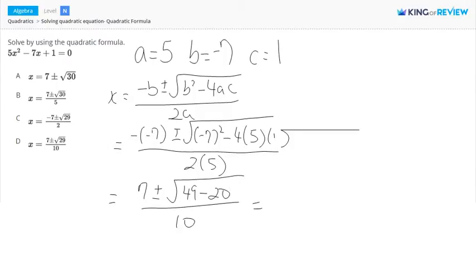And that is equal to 7 plus or minus square root of 29 over 10. And therefore, the answer to this question is going to be d.